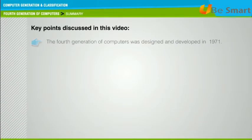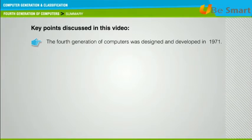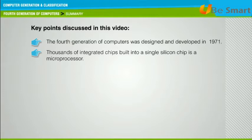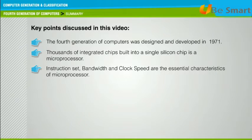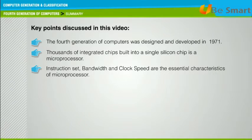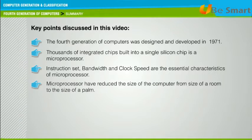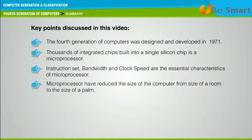Key points from this video: The fourth generation of computers was designed and developed in 1971. Thousands of integrated circuits built into a single silicon chip is a microprocessor. Instruction set, bandwidth, and clock speed are the essential characteristics of a microprocessor. Microprocessors reduced the size of the computer from the size of a room to the size of a palm.